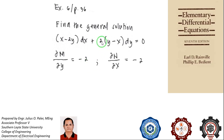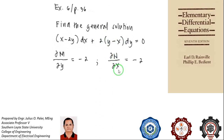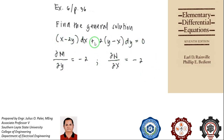N is 2y minus 2x. If you differentiate this with respect to x, then 2y is zero and the derivative of minus 2x with respect to x is negative 2. We have satisfied the condition and indeed we are dealing with an exact differential equation.